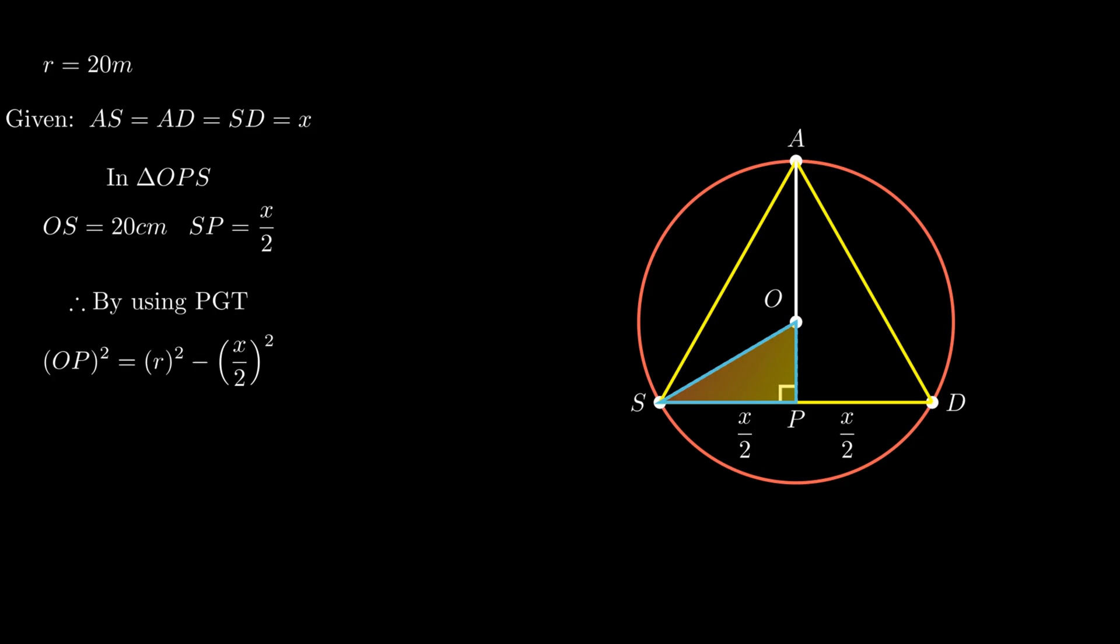On transposing this equation for segment OP, we get square of OP is equal to square of 20 minus square of X by 2. On simplifying, we get square of OP equals 400 minus square of X by 2, which is further simplified as OP equals square root of (400 minus (X/2)²).